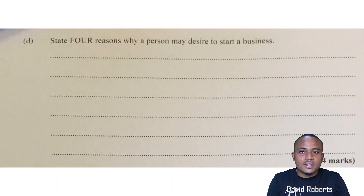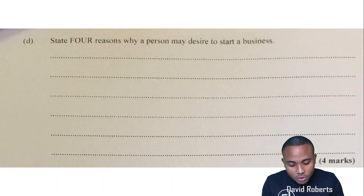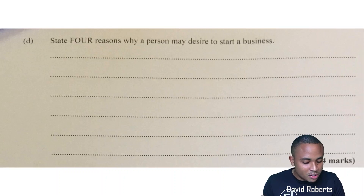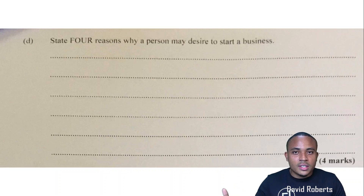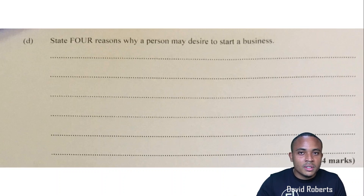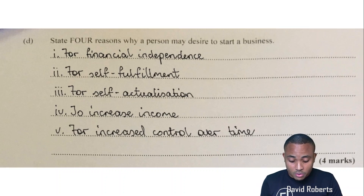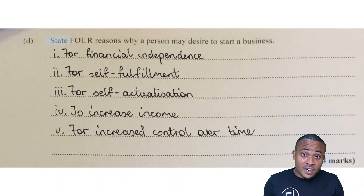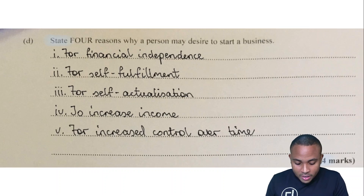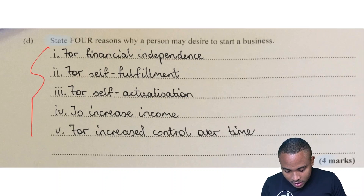Part d: state four reasons why a person may desire to start a business. This again comes straight out of the syllabus. CSEC wants you all to do well, especially for POB — you just have to put in your work, read your textbook, read the notes, read the syllabus, and know how to answer. For four marks I've given you five, so any four out of these five will get you your marks.